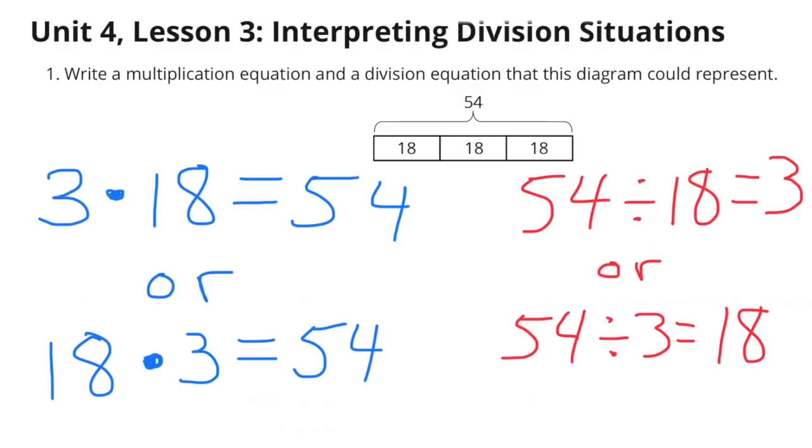3 times 18 equals 54, or 18 times 3 equals 54. 54 divided by 18 equals 3, or 54 divided by 3 equals 18.